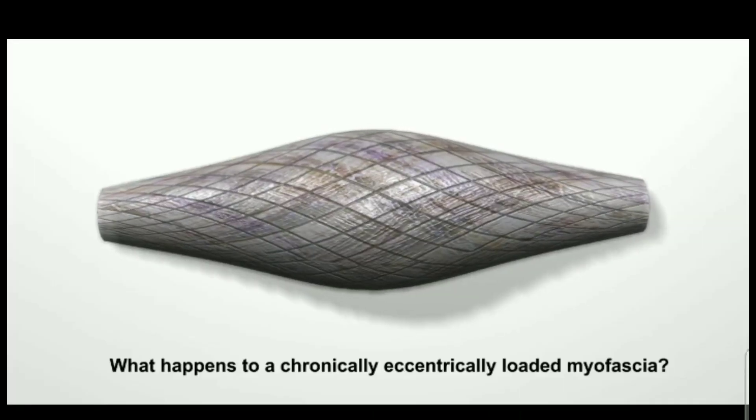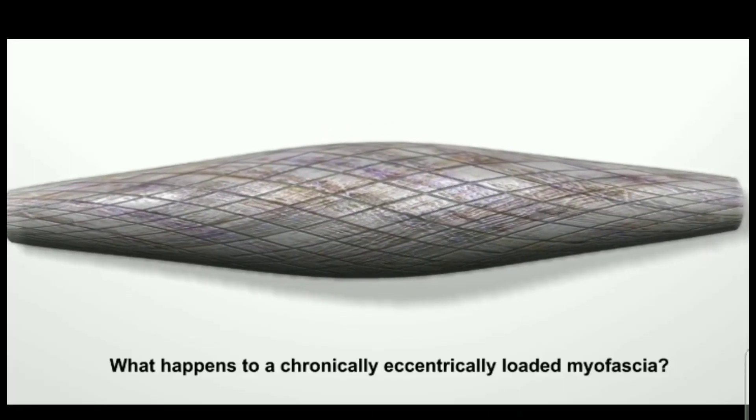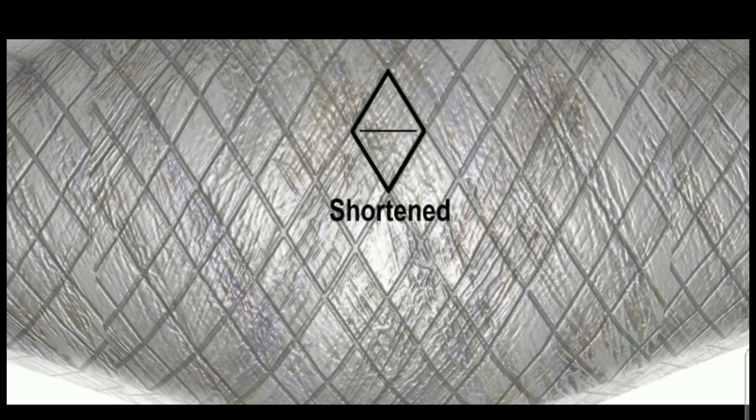What happens to myofascia that is chronically eccentrically loaded? This is the myofascial matrix. A normal or ideal myofascial tissue presents a rhombus or diamond-shaped texture.